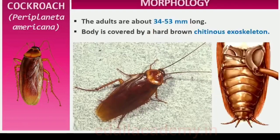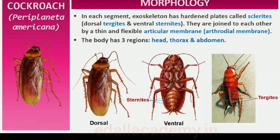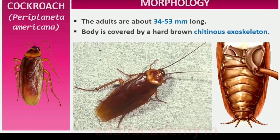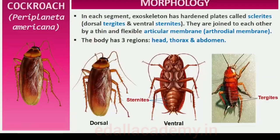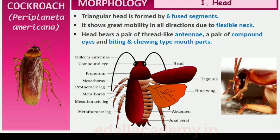The adults of the common species of cockroach, Periplaneta americana, are about 34 to 53 millimeters long with wings that extend beyond the tip of the abdomen in males. The body is segmented and divisible into three distinct regions: head, thorax and abdomen. The entire body is covered by a hard chitinous exoskeleton, brown in color. In each segment, the exoskeleton has hardened plates called sclerites — tergites dorsally and sternites ventrally — joined by a thin and flexible articular membrane called arthrodial membrane.